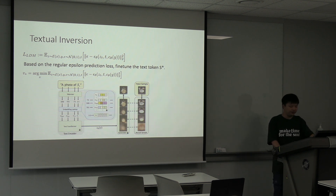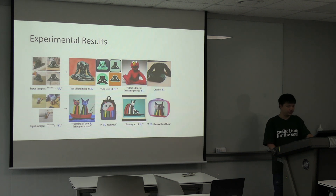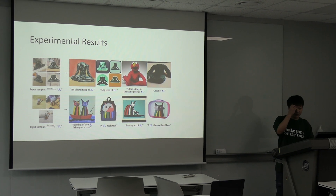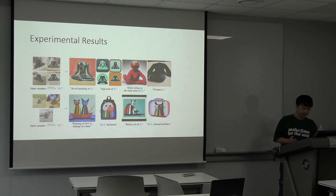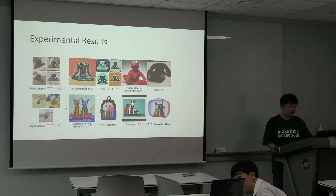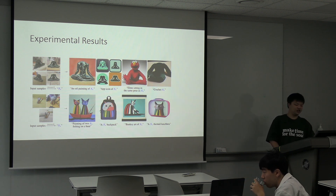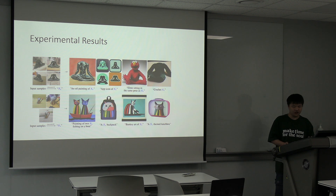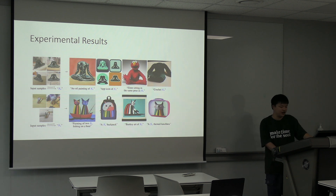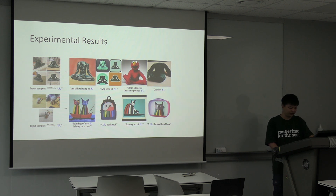In here, you can see that they minimize the normal diffusion loss by changing the text token. After learning this token, essentially what happens is the new token S* represents this concept. So for the previous example of those four sets of images, using this new S* token, we can represent an oil painting of S*, or an elbow sitting in this same pose, and so on. The big idea is that all information about this personalized concept is distilled into the S* token, and is later used during prompting for generation of these customized concepts.